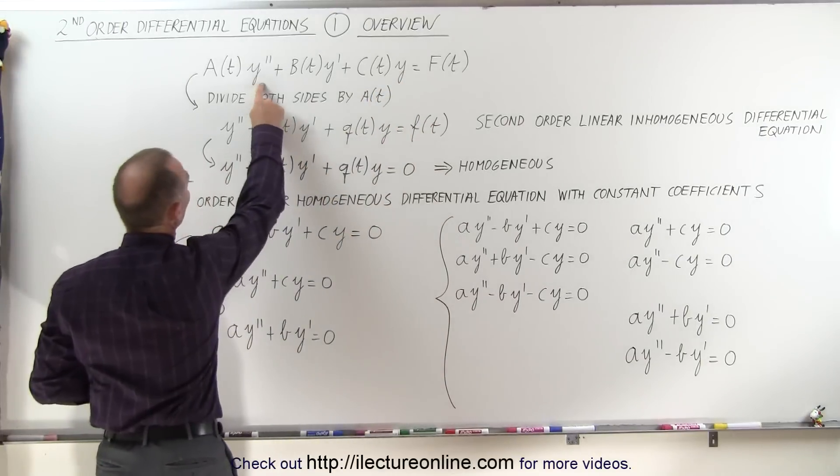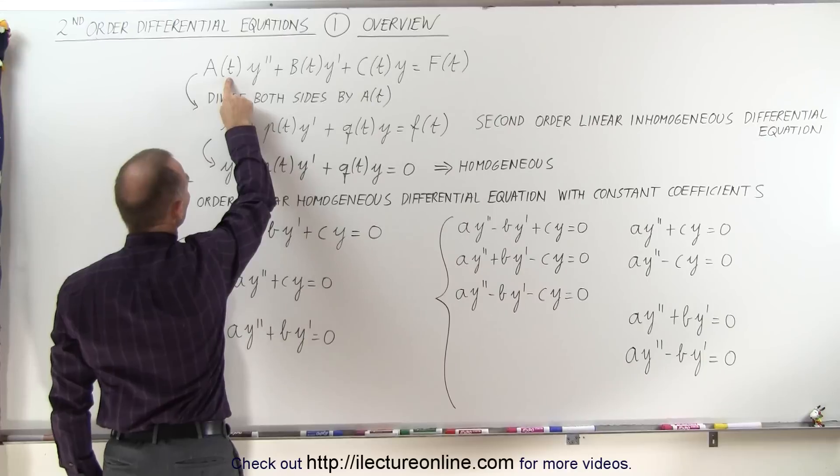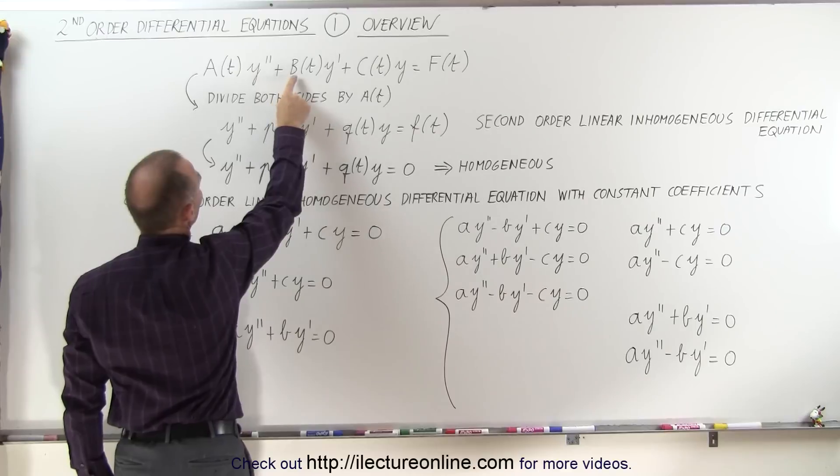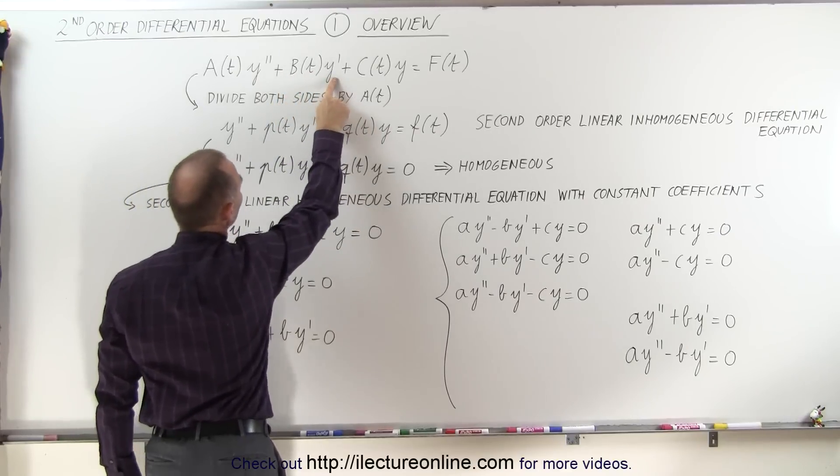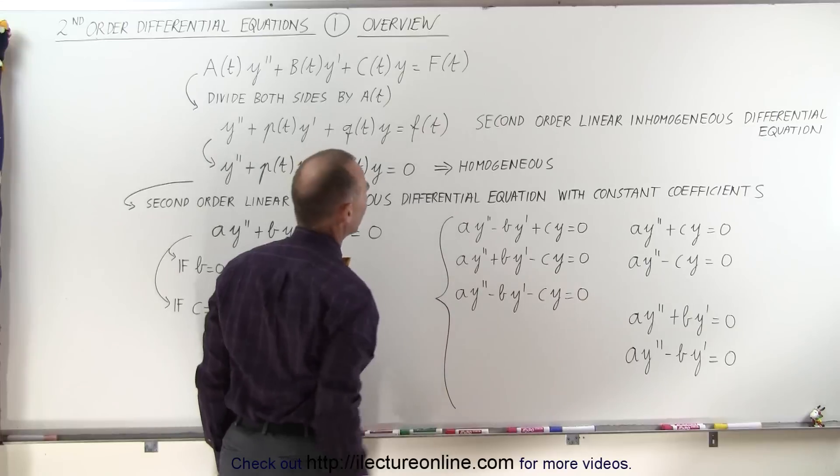Each of them are multiplied times a function of t. So we have a function of t times y double prime plus a function of t times y prime plus a function of t times y equals another function of t.